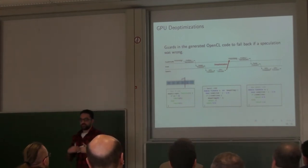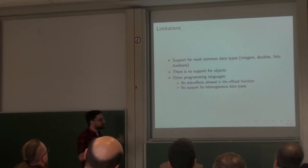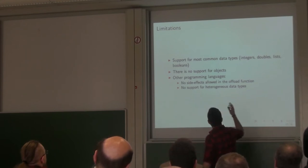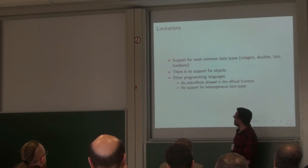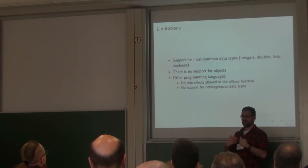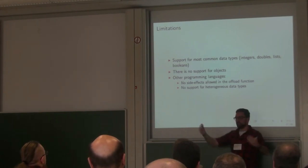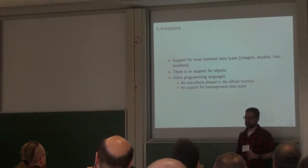As far as I know, there is no other project that performs de-optimization to GPU. However, we have some limitations. In Ruby and R, we only support common data types: integers, double, lists, arrays. We don't support object types — for example in R, it would be good to support data frames, but we don't yet. Also, the function you compile must not have side effects — in R that's fine, but in Ruby it's not legal, so we're breaking the semantics. We also don't allow mixed data types in output.